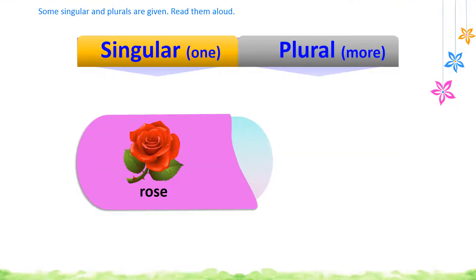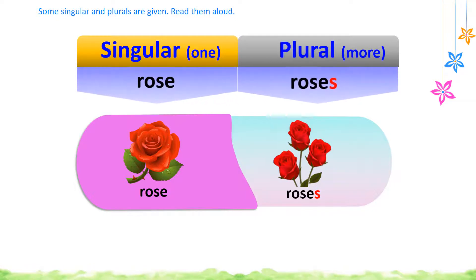Some Singulars and Plurals are given. Read them aloud. Singular means one object. Plural means more than one object. Here, Rose is a singular. Roses are Plural. Rose, Roses.